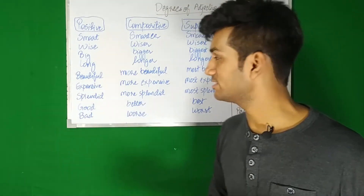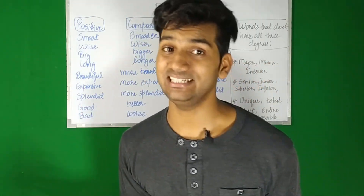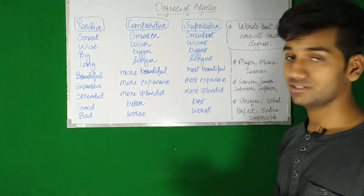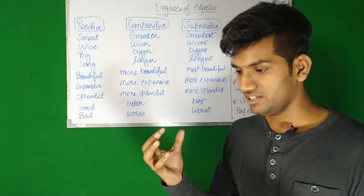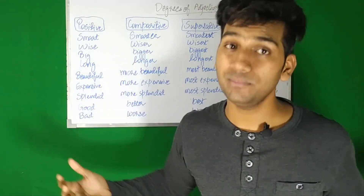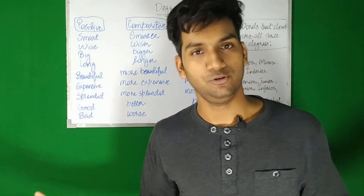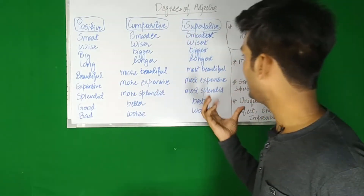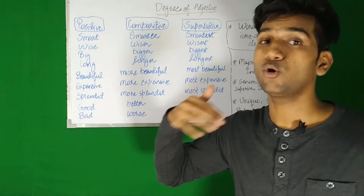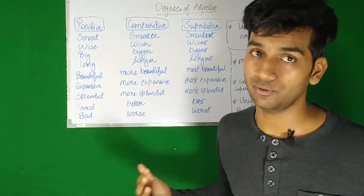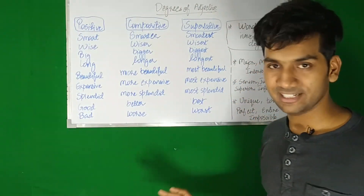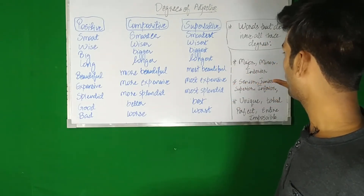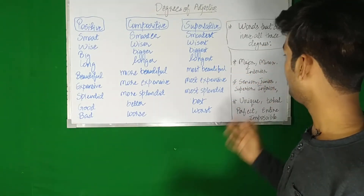There are some words that do not have all three degrees. For example: major, minor, interior. 'It's a major project' - it cannot get any more major or less major. So these words do not have a comparative or superlative degree. You cannot say 'It's a more major project' or 'He has the most major project.'